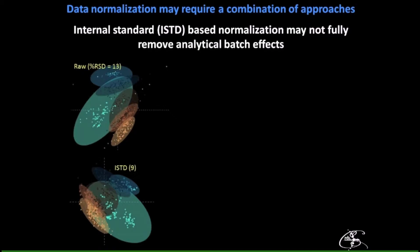Our tools to remove this analytical noise are normalizations. The most widely used is internal standards: you add known compounds to all samples before analysis, measure how much you get back, and calculate a correction factor to apply to other analytes. This is a great method, but it may not remove more nuanced batch effects. Here's an example PCA plot — even after internal standard correction, you've tightened variance but haven't removed the batch effects. This is still a problem to address.